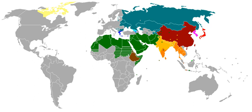All writing systems require at least one set of defined base elements or symbols, individually termed signs and collectively called a script; at least one set of rules and conventions understood and shared by a community, which assigns meaning to the base elements (graphemes), their ordering and relations to one another; at least one language generally spoken whose constructions are represented and can be recalled by the interpretation of these elements and rules; and some physical means of distinctly representing the symbols by application to a permanent or semi-permanent medium, so they may be interpreted — usually visually, but tactile systems have also been devised.